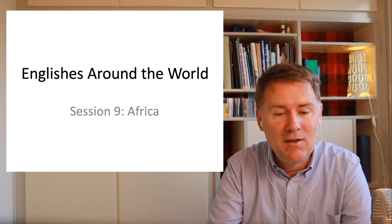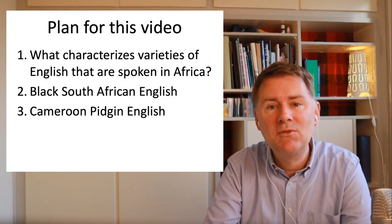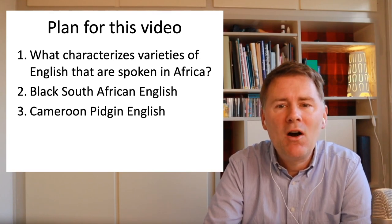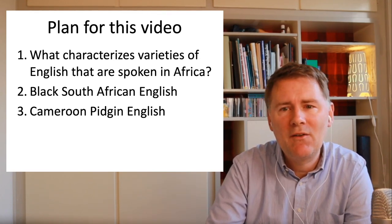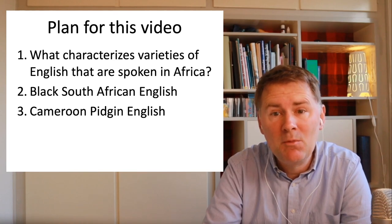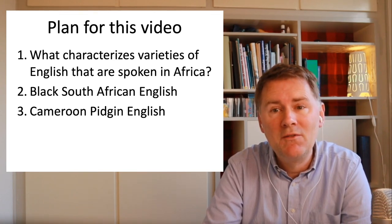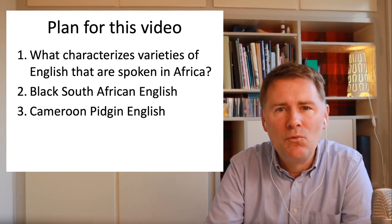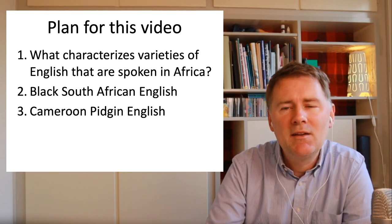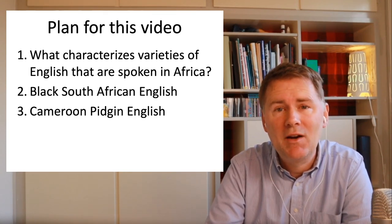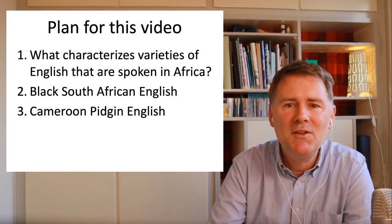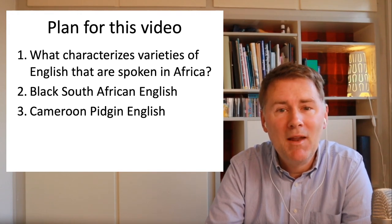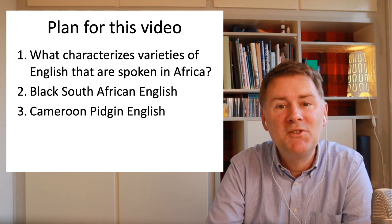The plan for this video is that I'll first discuss a few general issues with regard to varieties of English spoken in Africa — what do they have in common, how do they differ, and how does English in Africa fit into the more general picture. We cannot really understand the role of English in Africa without taking into account its colonial history. In the main part I'll take a closer look at two varieties: Black South African English and Cameroon Pidgin English.